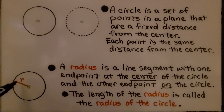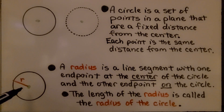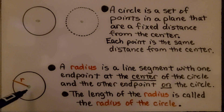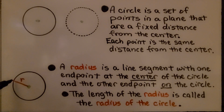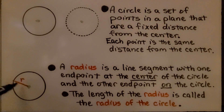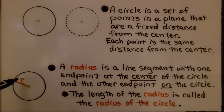A radius is a line segment with one point at the center of the circle and the other endpoint on the circle. The length of the radius is called the radius of the circle. You can see we've got an R for radius.